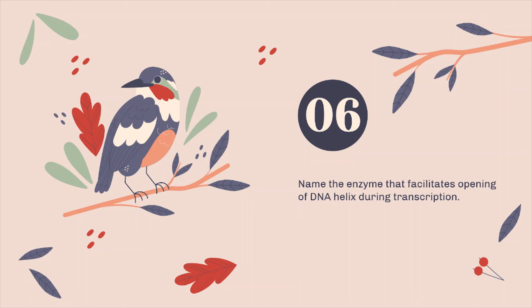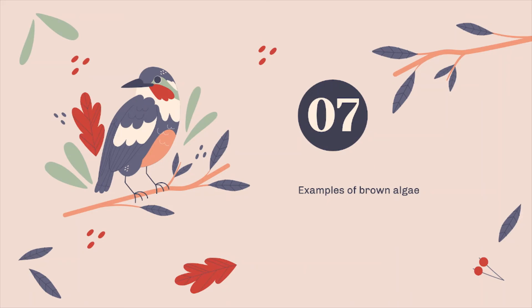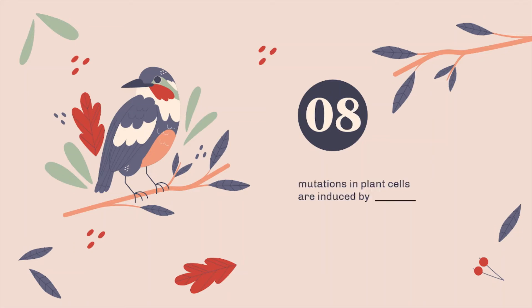Sixth: the enzyme that facilitates opening of the DNA helix during transcription is ___. Seventh: examples of brown algae. For this, you need to learn about the scientific and common names of algae and their classification. Eighth: mutation in plant cells are induced by ___.